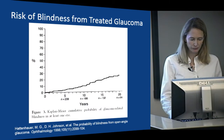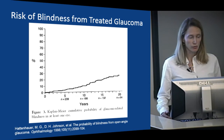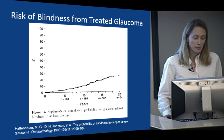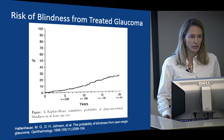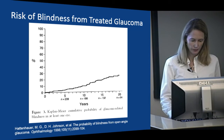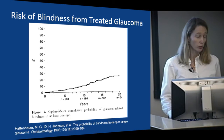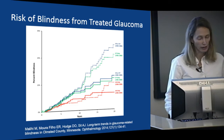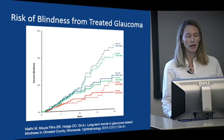We have treatment for glaucoma and we know that lowering intraocular pressure reduces the risk of vision loss, yet we still have patients losing vision. The Mayo group looked at Olmstead County data and found that more than 20% of patients in their cohort lost vision in at least one eye and progressed to legal blindness in one eye over 20 years. This data was from mostly the 1980s, and these were all recognized and treated patients. More recently the same Mayo group found it's improved, but still more than 10% of patients with treated glaucoma are going blind in one eye.